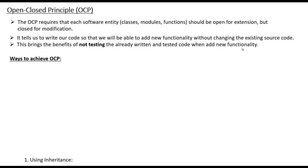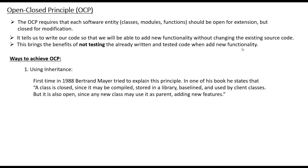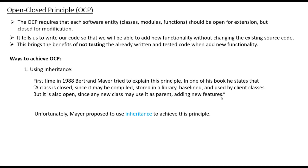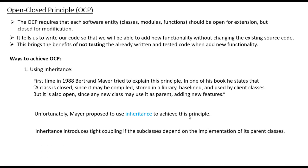The Open and Closed Principle is not a very new concept. Going back in history, first in 1988 Bertrand Meyer tried to explain this principle in one of his books. It states that a class is closed since it may be compiled, stored in a library, baselined, and used by client classes — but it is also open since any new class may use it as a parent, adding new features. Unfortunately Meyer proposed inheritance to achieve this, but inheritance introduces tight coupling if subclasses depend on the parent's implementation. Later, Martin proposed using interfaces instead of inheritance to achieve the Open and Closed Principle.